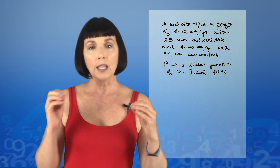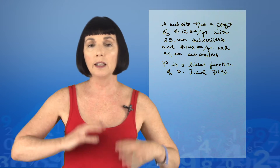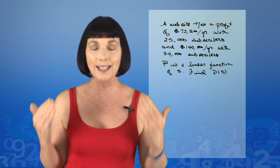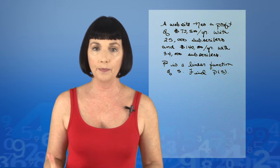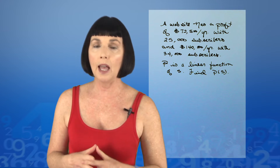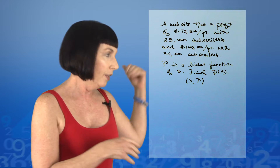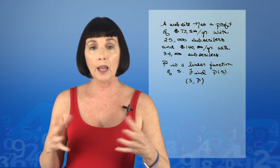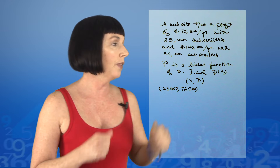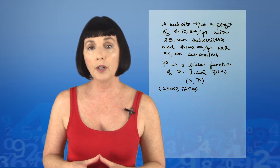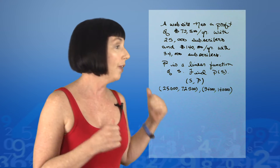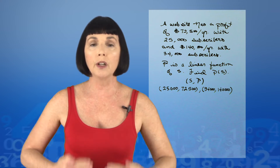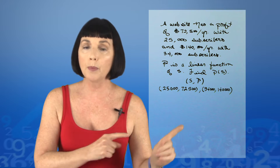Let's think about this. The profit is a linear function of the number of subscribers, which means it's the equation of a line. So we have ordered pairs of the number of subscribers and the profit. Filling in what we know, we have the ordered pairs (25,000; 72,500) and (34,000; 140,000). We're looking for the equation of the line that contains both of these points.